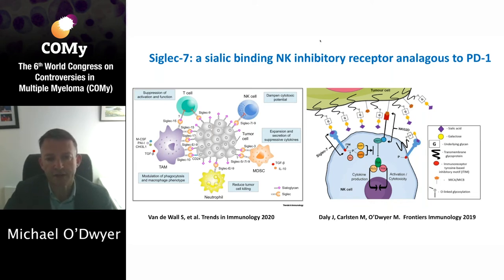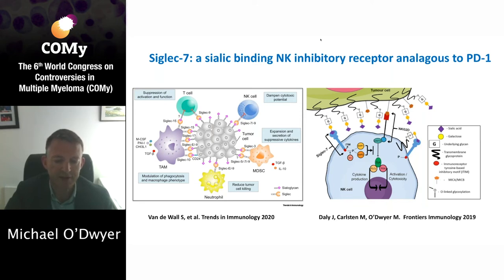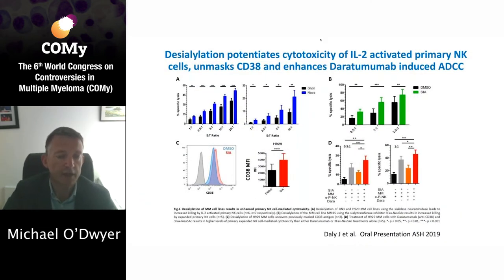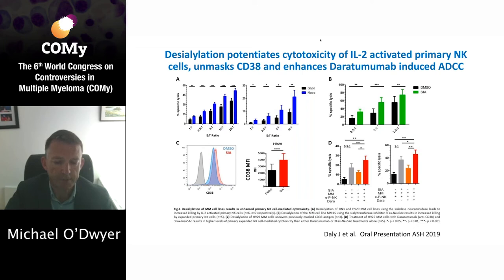On the right-hand side, you can see that the Siglecs on the NK cells contain immunotyrosine inhibitory motifs, or ITIMs, which activate phosphatases such as SHIP-1 to inhibit activating signals in a similar fashion to the way PD-1 inhibits T cells or NK cells. We have shown that multiple myeloma cells are strongly sialylated and express ligands for Siglec, and with increasing expression, these Siglec ligands are in fact induced by hypoxia.